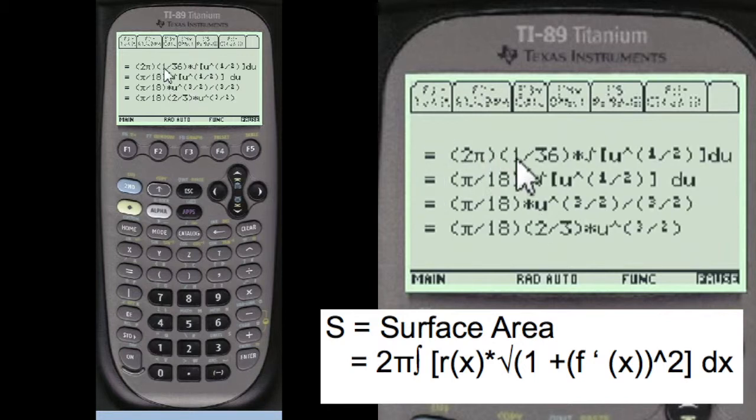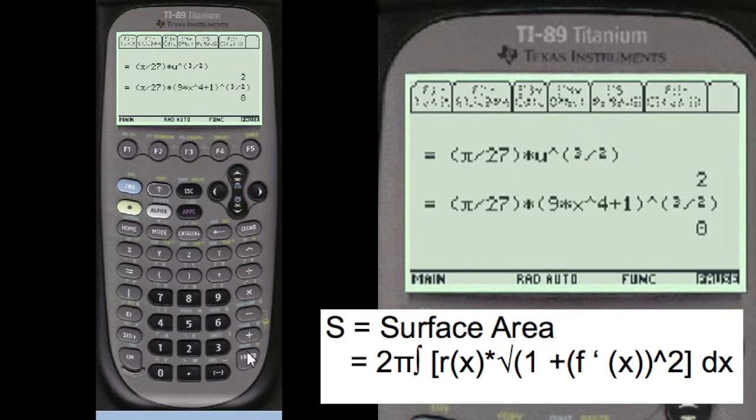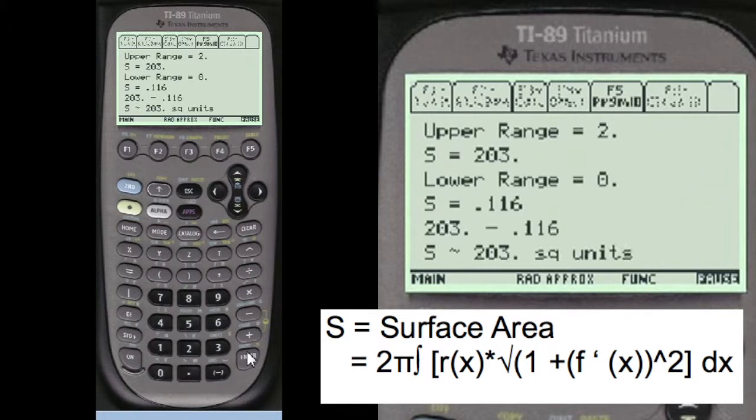So that's 2 pi, and here's the 1 over 36 here. And that computes to pi over 18, etc. We're doing the integral of 1 half. Of course you add 2 halves to that. And upper range less than the lower range, and you get 2 of 3 square units.